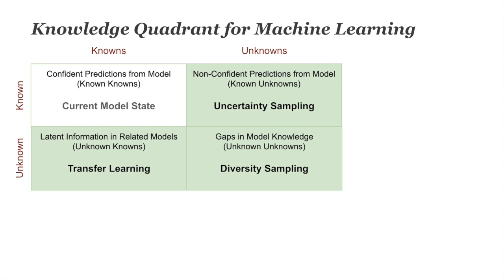One way to think about these methods is through a knowledge quadrant: known knowns, known unknowns, unknown knowns, and unknown unknowns. Your known knowns are your current model's confident, correct predictions — what your model knows that it knows. Your known unknowns are what your model knows it doesn't know — for a binary classification task, these are items around 50% confidence, right at the decision boundary. This is where we use uncertainty sampling, which targets items near the decision boundary.